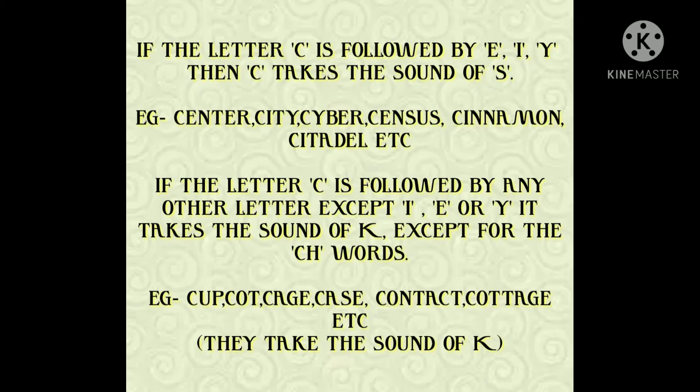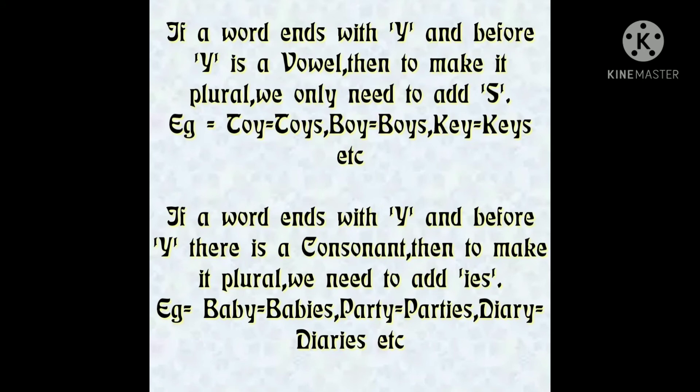The next amazing fact is: if a word ends with Y and before Y there is a vowel, and we need to make it plural, then we will just add S. For example, Boy will become Boys — B-O-Y — before Y there is a vowel O, so to make it plural we just add S. Similarly, Toy becomes Toys, and Key becomes Keys.